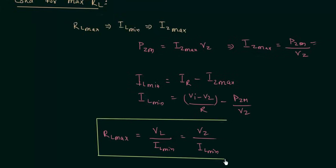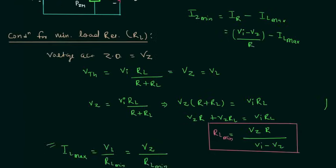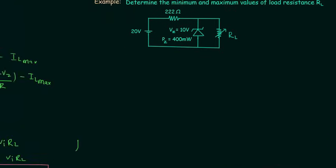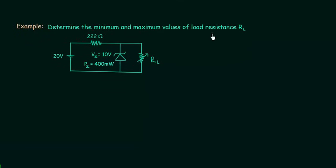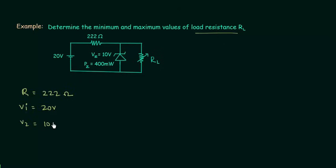Using these two conditions we can easily solve numerical problems. I will solve one numerical problem to practice what we have learned. In this example we have to determine the maximum and minimum values of load resistance. In this circuit, R equals 222 ohms, which is the current limiting resistance. Vi equals 20 volts, Vz equals 10 volts, and Pzm equals 400 milliwatts. These are the given values and we have to calculate minimum and maximum values of load resistance.